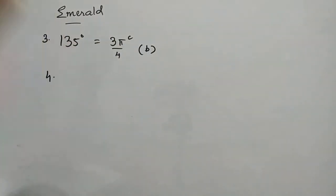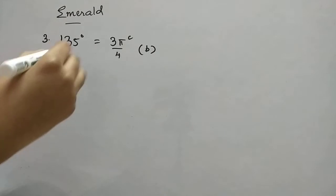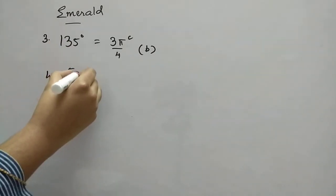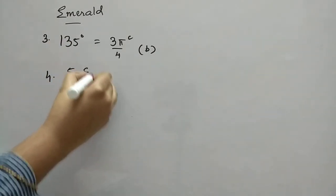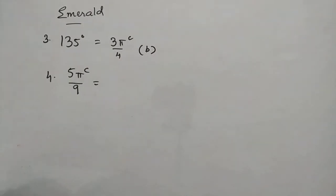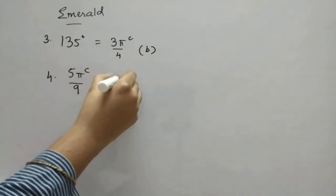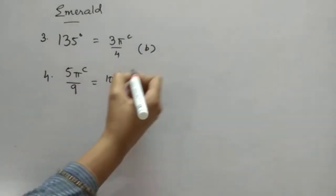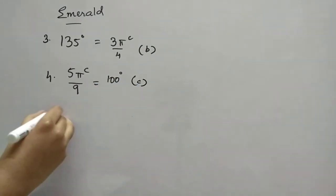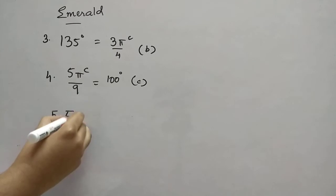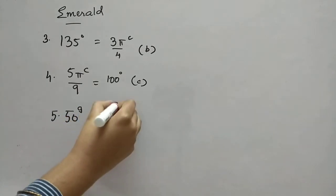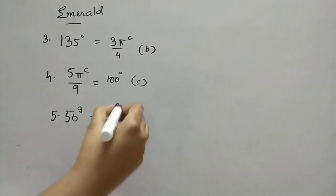Now fourth one, 5 pi by 9. You have to find that in degrees only. So it is 100 degrees, option C. Fifth one, 58 G. You know this right? I taught you in the beginning. So this one we have to write in radians. That will be 5 by 4, option A.